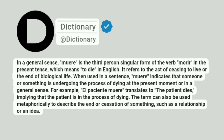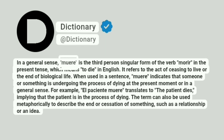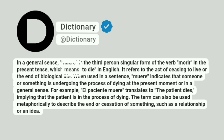Dictionary. At dictionary, in a general sense, muere is the third person singular form of the verb morir, in the present tense, which means to die in English.